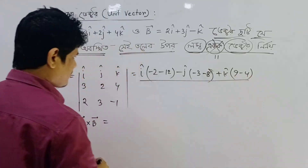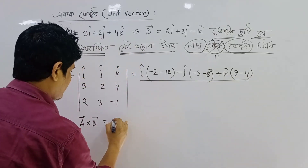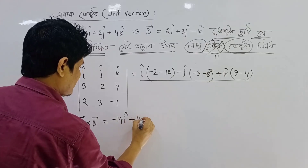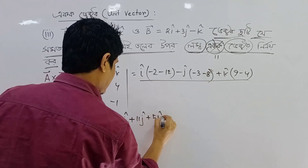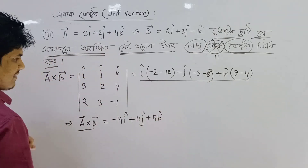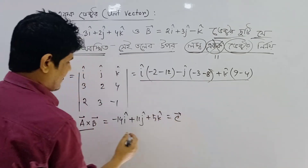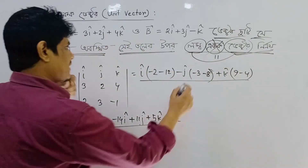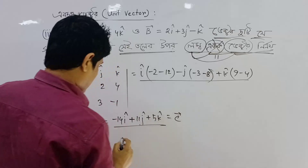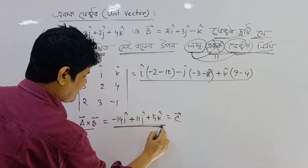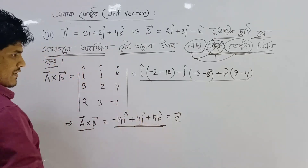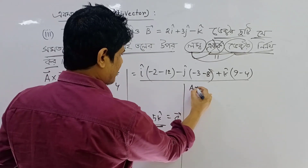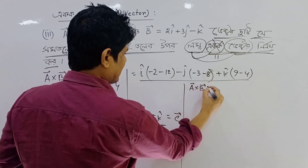So the result vector is: minus 14i plus 11j plus 5k. We have found A cross B. We call this a long vector — this is the magnitude vector.